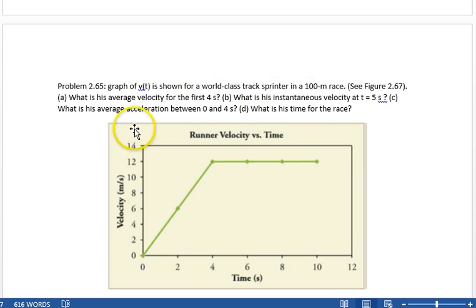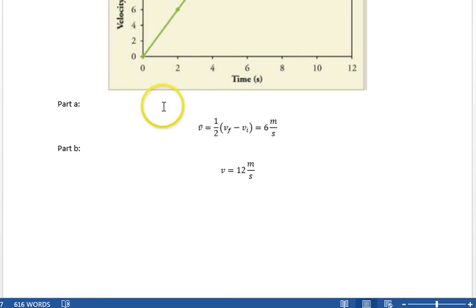And part C, what is his average acceleration between 0 and 4 seconds? Okay, so part C, his average acceleration. So, his average acceleration is the change in velocity over the amount of time it took.